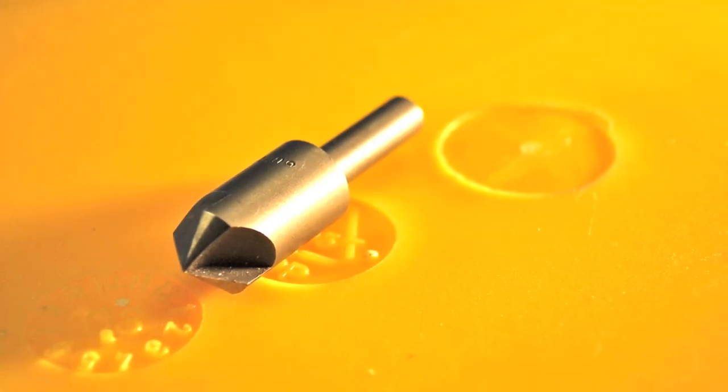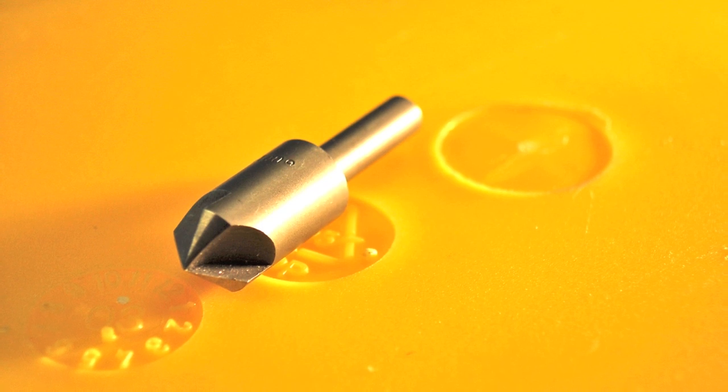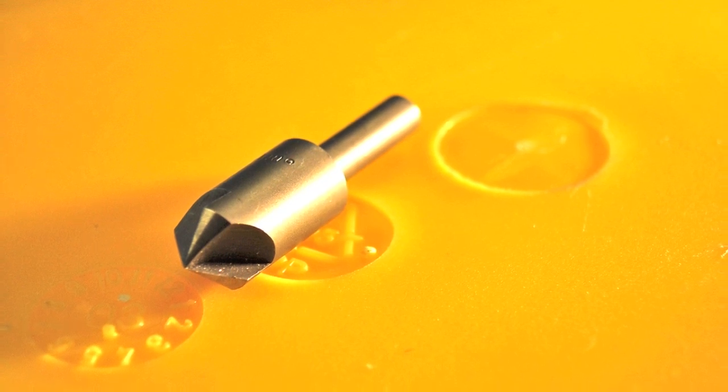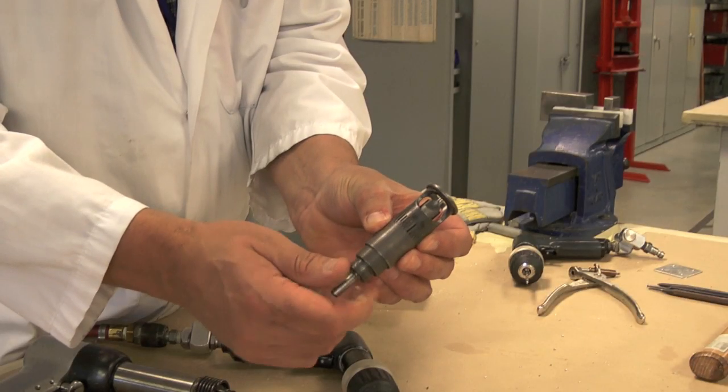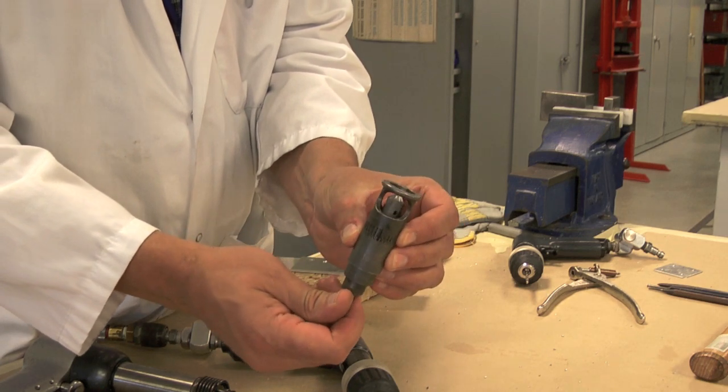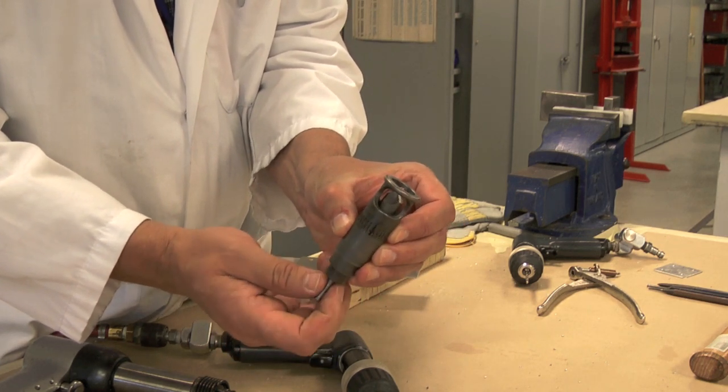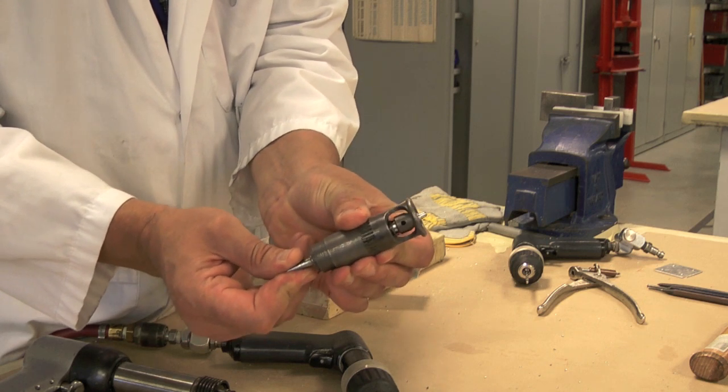The Microdial Countersink has several advantages over the standard multi-flute cutter. The Microdial, also called the Micro-Stop, features a rotating extensible shaft in a fixed body.